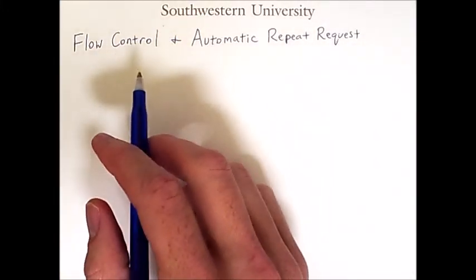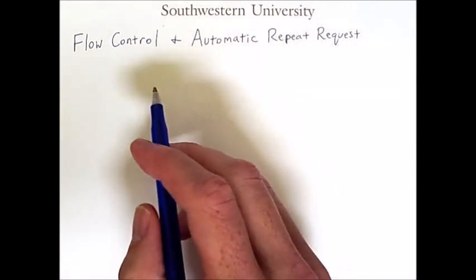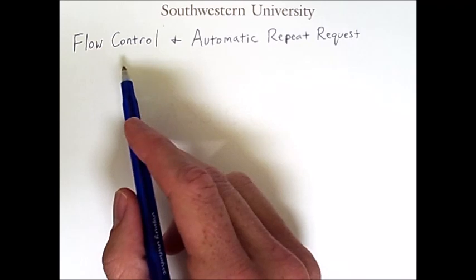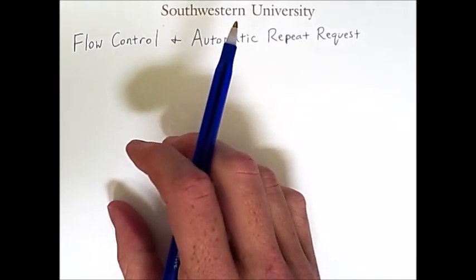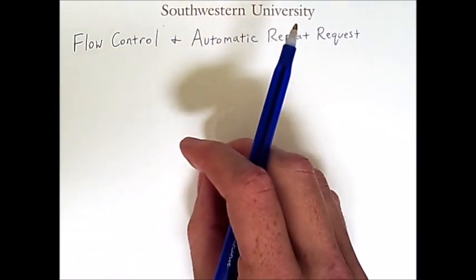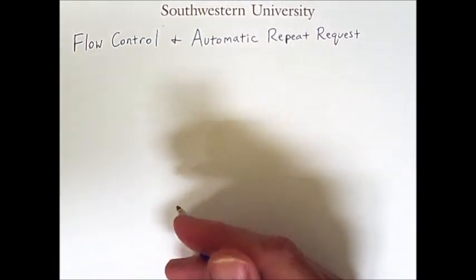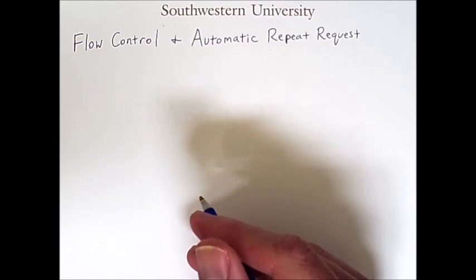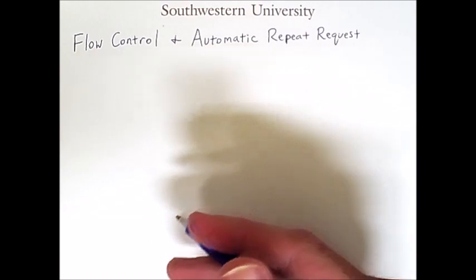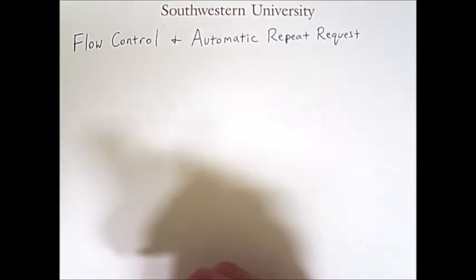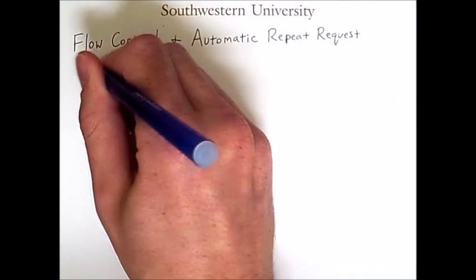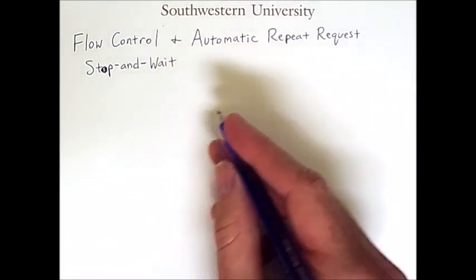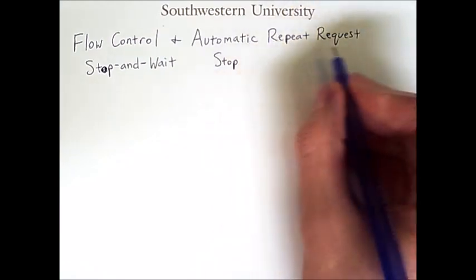This video is about flow control and an associated concept known as an automatic repeat request, or ARQ. These are network functions that occur at the data link layer of the protocol stack. A very simple form of flow control is stop and wait, and the stop and wait form of flow control is directly associated with the stop and wait form of automatic repeat request, or ARQ.